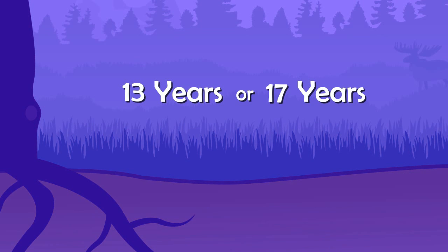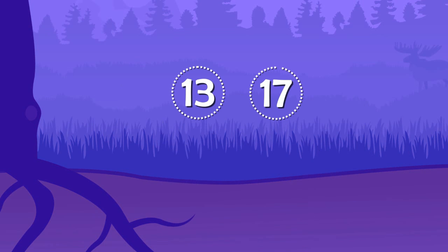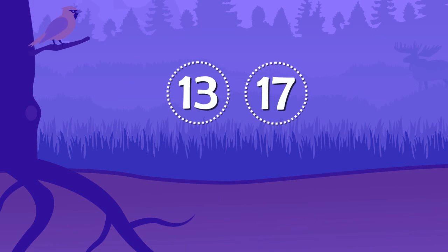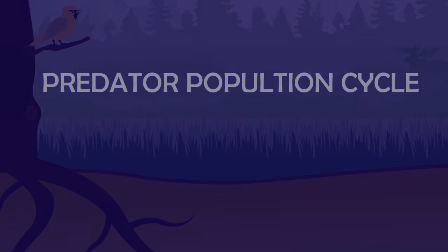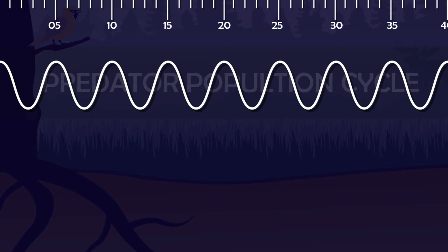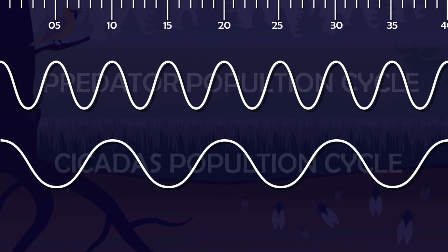What's so fascinating about these numbers 13 and 17? Yes, they are prime numbers. Actually, most predators of cicadas have 5 years of population cycle. Imagine if cicadas emerge after every 10 years. Their emergence will coincide every time with these predators leading to their extinction.